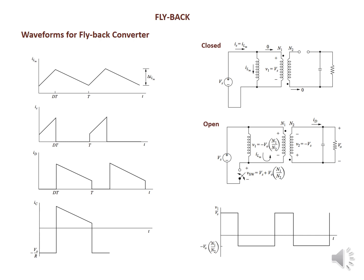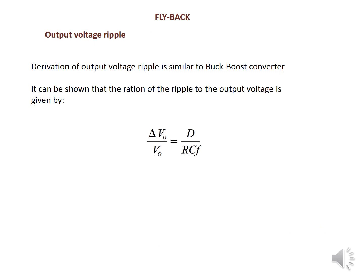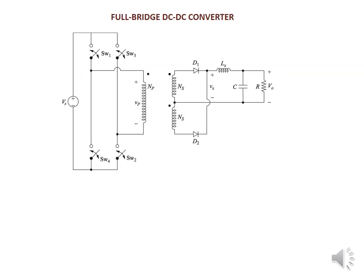The waveform terminals are shown as triangular waveforms. For minimum Lm for continuous current, iL_min equals iLm minus ΔiLm/2 and iL_max equals iLm plus ΔiLm/2. The boundary condition gives Lm_min equals (1−D)²/(2f) times (N1/N2)². The output voltage ripple derivation is similar to the buck-boost converter, giving: ΔV0/V0 equals D divided by (C·f).